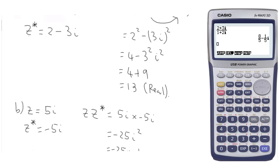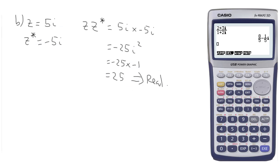And finally, z equals 11. So z equals 11. So you can think of that as 11 plus 0i. So the conjugate is not going to be any different. It's just going to be 11 minus 0i, which is still just 11.